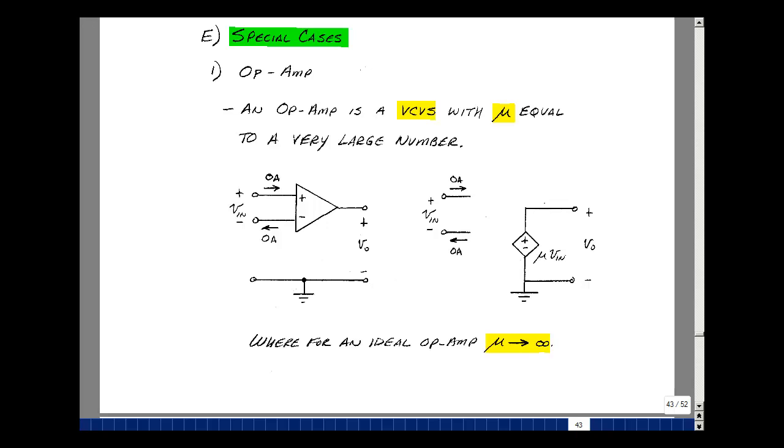This lesson deals with an op-amp as a voltage-controlled voltage source. You can find these notes in the course e-book in Chapter 3, starting on page 43.